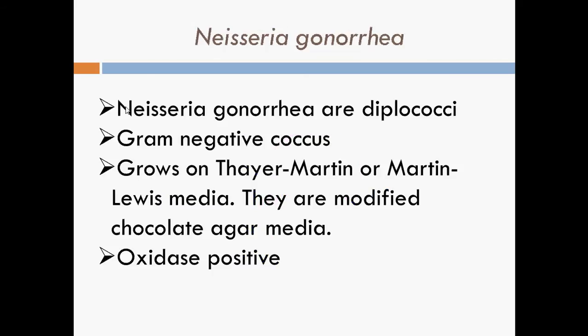There are two genera we will look at today: the first one being Neisseria, the second being Moraxella. Neisseria is actually a large genus of commensal bacteria that colonize the mucosal surfaces of many animals.